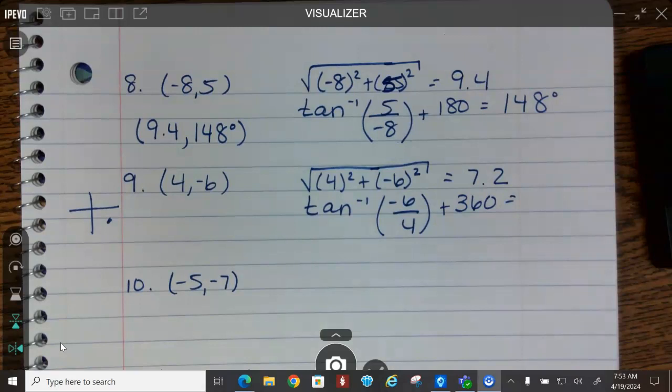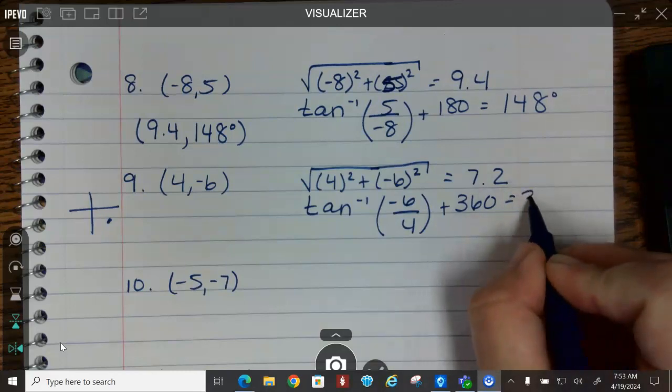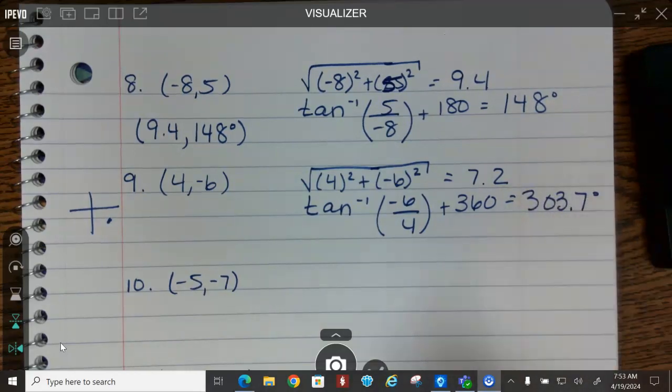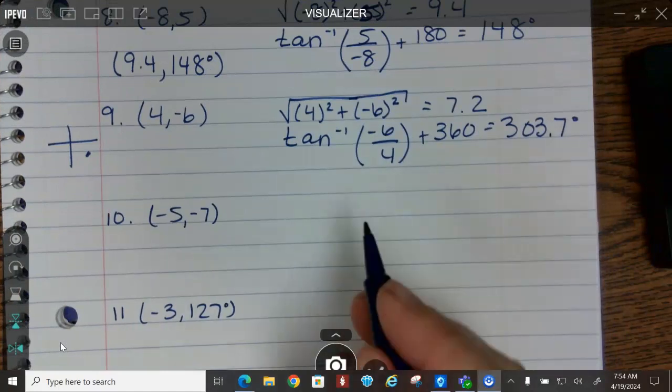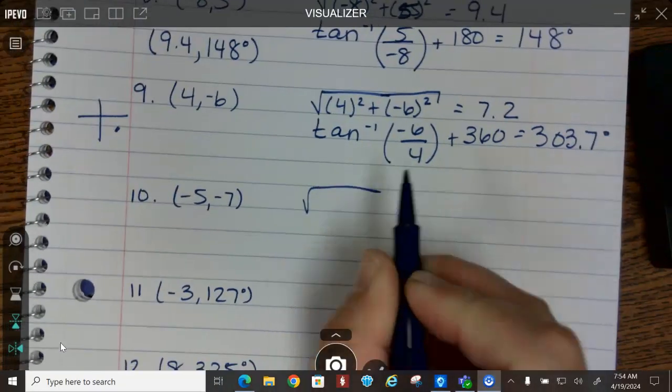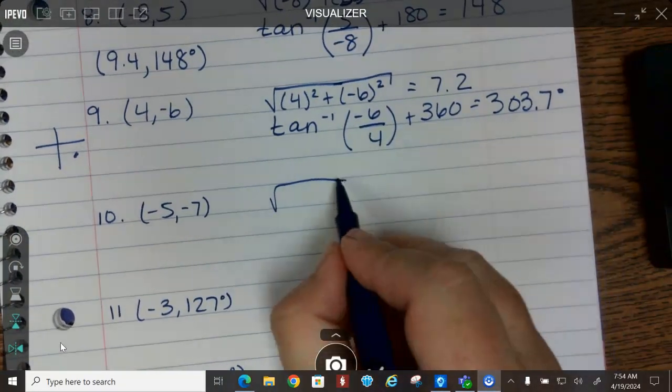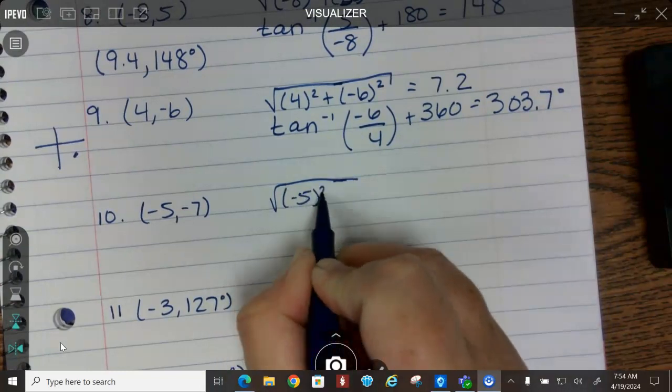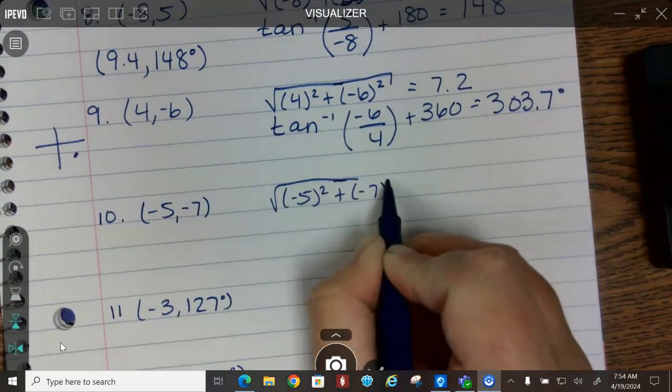Positive then negative—a lot of y'all have accidentally said 180 degrees, but it really is 360. So we do want to be very careful with that. Negative 6 divided by 4 plus 360 equals 303.7 degrees.